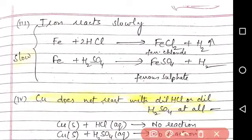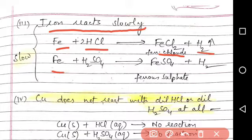Now how does iron react with acids? Iron reacts slowly. The rate is decreasing. Fe + 2HCl forms FeCl2, ferrous chloride plus hydrogen. Fe + H2SO4 gives ferrous sulfate, FeSO4 plus hydrogen.